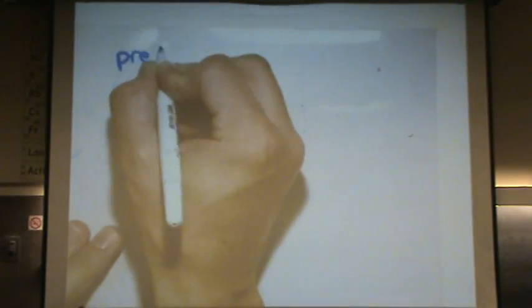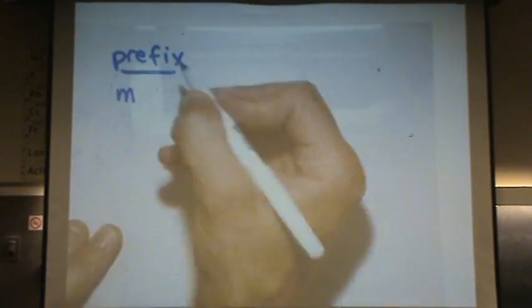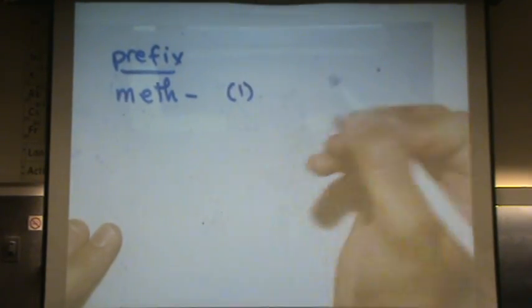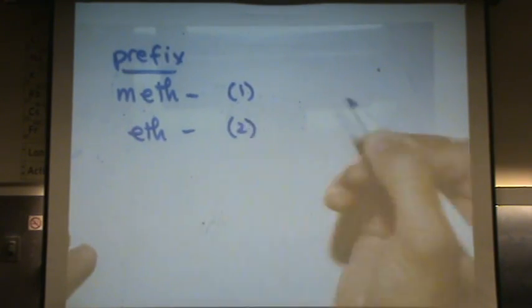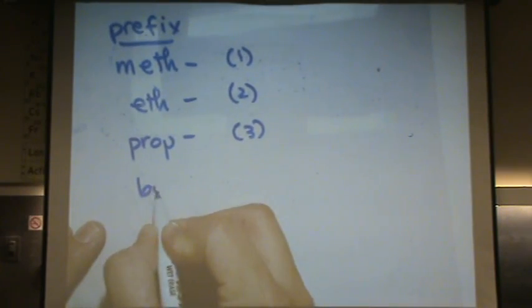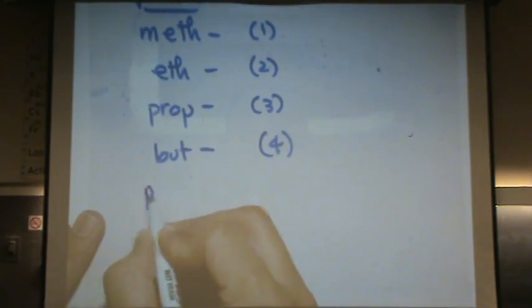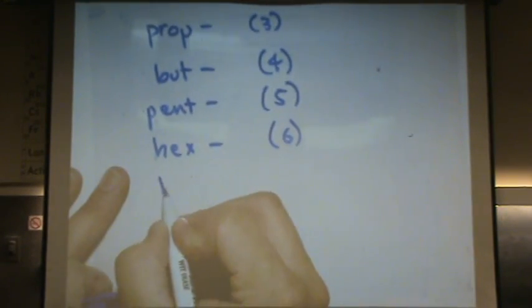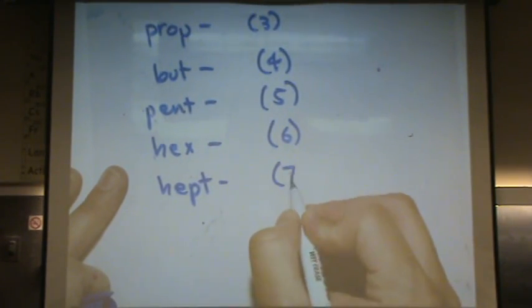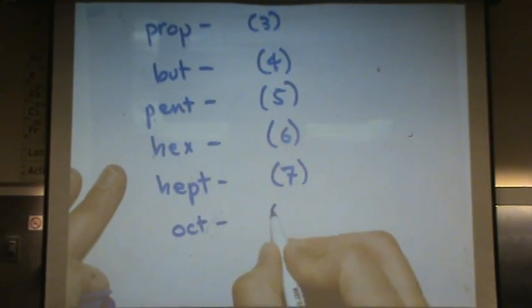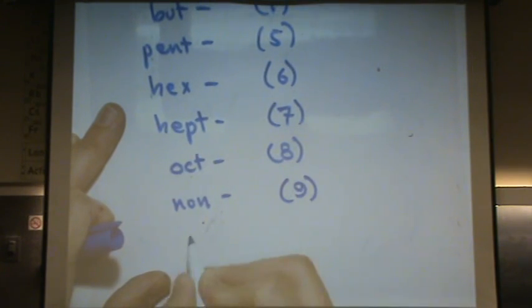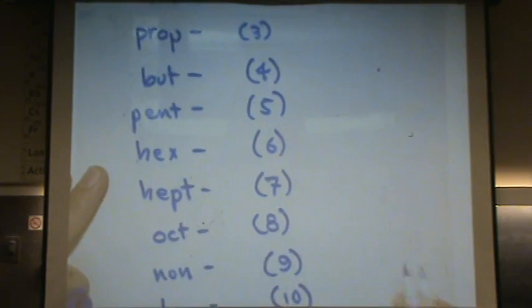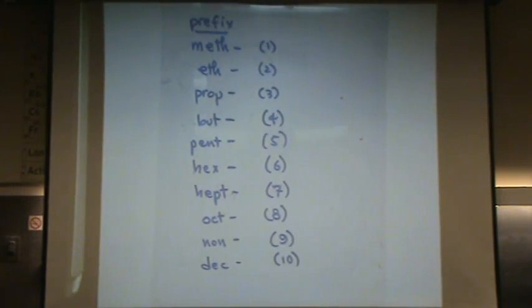First you want to remember the prefixes. The prefixes for one carbon is meth, like methamphetamines. That's one carbon. Eth, two carbons. Prop, like propeller, is three carbons. But, not but, is four carbons. Pent is five, like pentagon. Hex, like I'm putting a hex on you, is six. That had nothing to do with six, I guess. Like hexagon. Hept is seven. Oct is eight. Non is nine. And dec is ten. So you have to know all those ten prefixes for naming. So if you have a molecule with ten carbons, that's a decane. Or could be. Eight carbons octane. So you got your high octane gasoline.